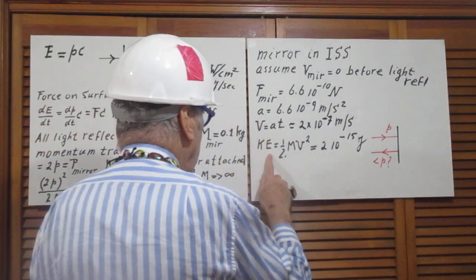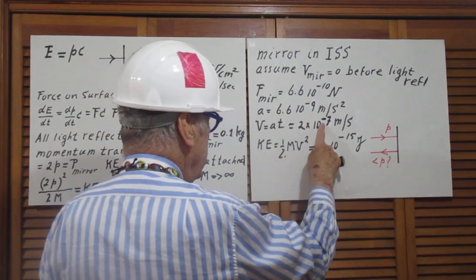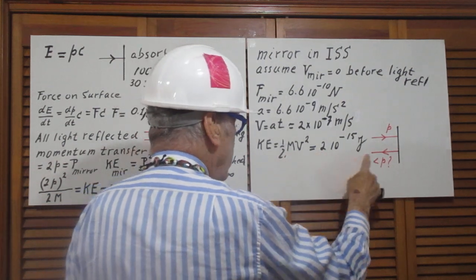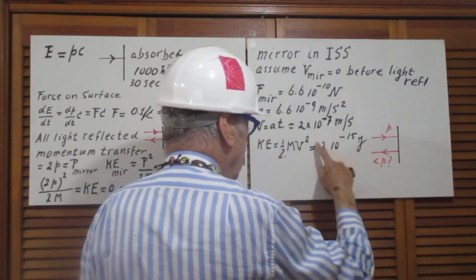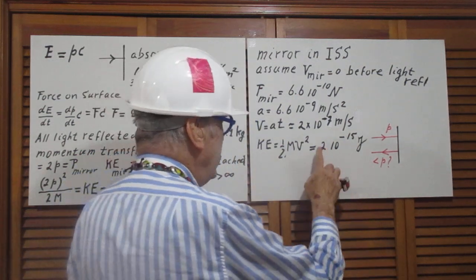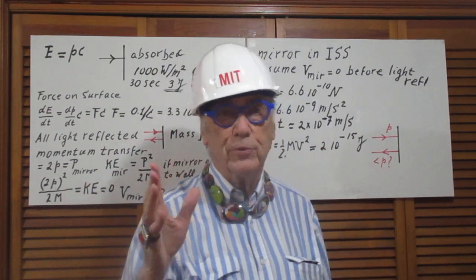So now the kinetic energy is one half mv squared. We have the v here and the mass is 0.1, so now it means that after the collision the mirror has an energy, a kinetic energy of 2 times 10 to the minus 15 joules.